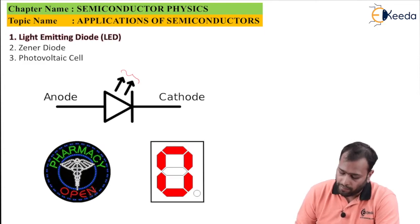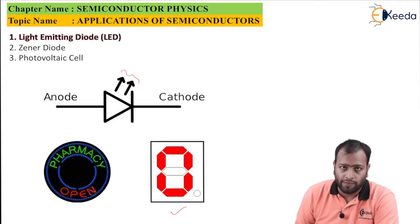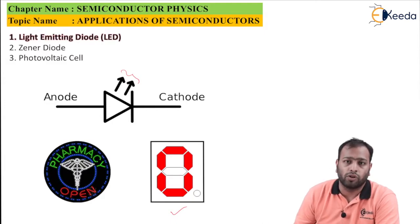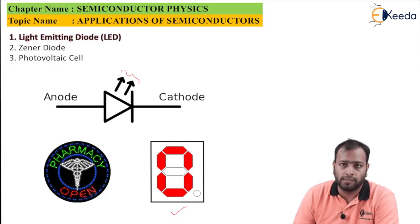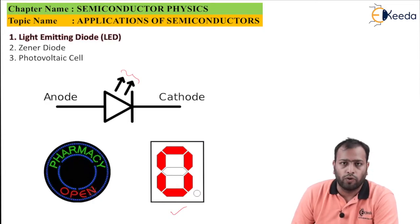Signage boards are made using LEDs to make them more attractive, and LEDs are used in seven segment displays which are commonly used in lifts and elevators. They're also used in signal indicators and your traffic signals to indicate the light time and so forth.